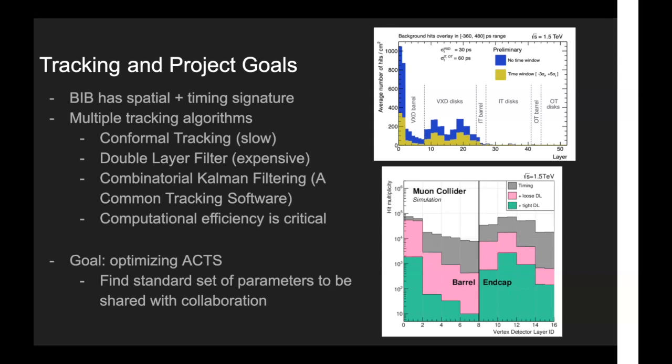And you can see from the pink and the green that using the double layer approach can significantly decrease the hit multiplicity. But this approach is also difficult in practical construction, and the construction of these layers is quite expensive. So another tracking approach that is being considered is combinatorial Kalman filtering, which is used in the ACTS or a common tracking software package. And ACTS, it was designed for efficiency, and so it provides a much needed computational efficiency boost and speed.